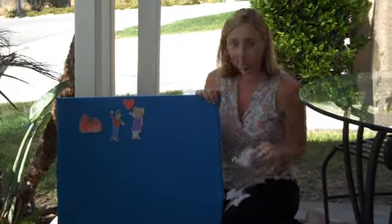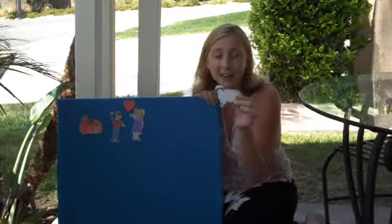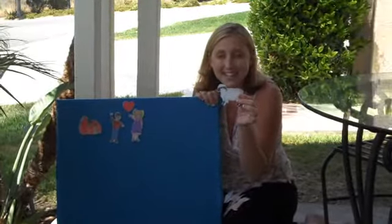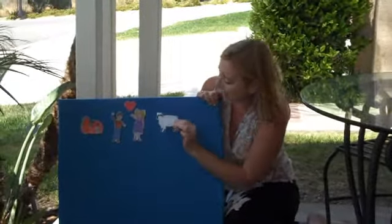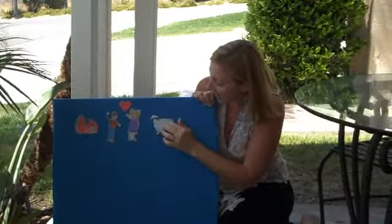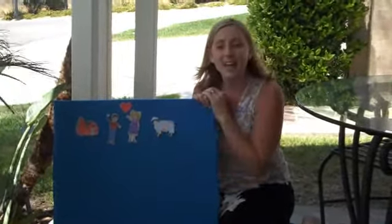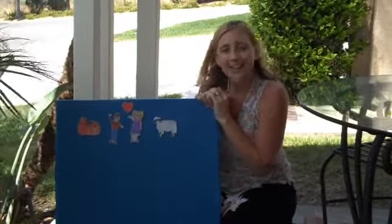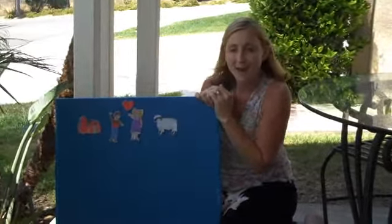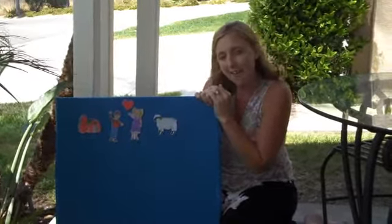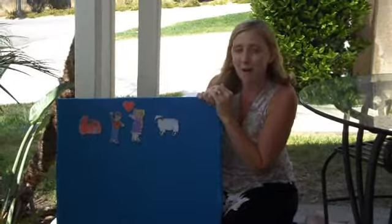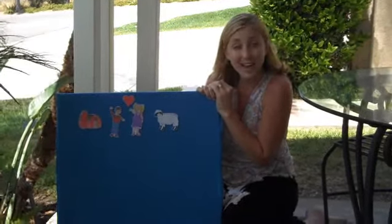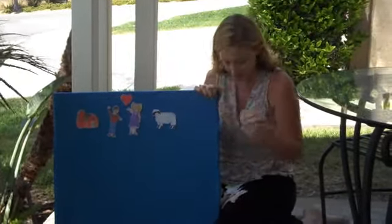And on that farm he had a... What kind of animal do you think that is? A sheep. You're right. E-I-E-I-O. With a baa baa here and a baa baa there. Here baa, there baa, everywhere baa baa. Old MacDonald had a farm, E-I-E-I-O.